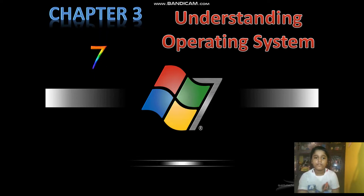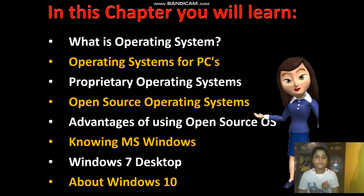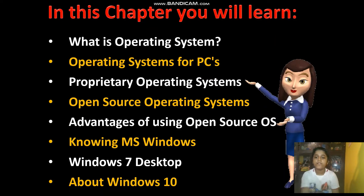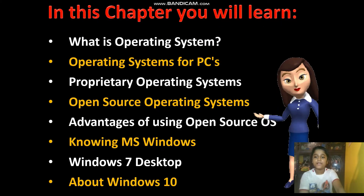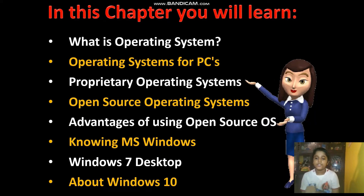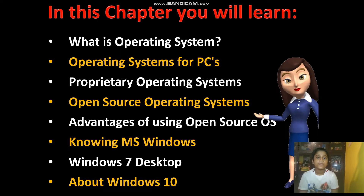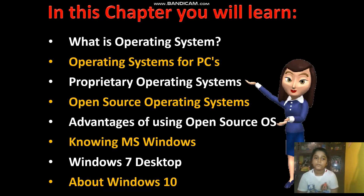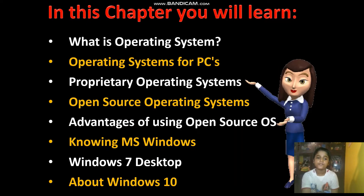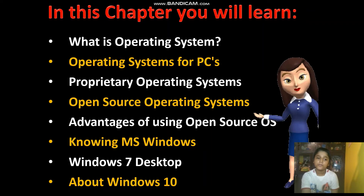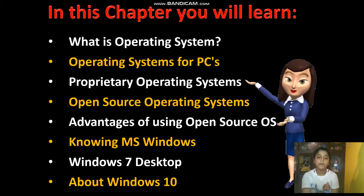In this chapter, we are going to learn what is an Operating System, Operating System for PCs, Proprietary Operating Systems, Open Source Operating Systems, Advantage of using Open Source OS, Knowing MS Windows, Windows 7 Desktop, and About Windows 10.